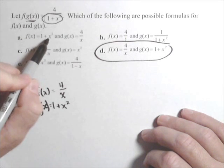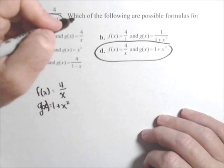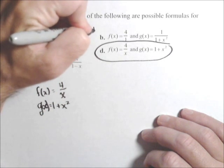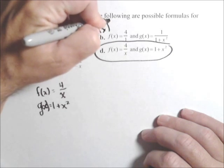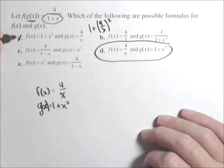The problem with a is it's backwards. So a would have come out to be one plus four over x, the quantity squared. So a doesn't work.